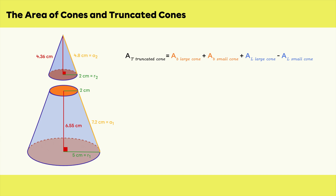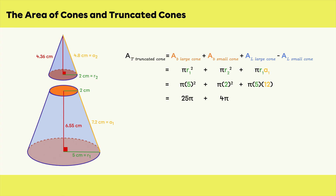To find the truncated cone's total area, start by calculating the large cone's base area using pi r squared. Since R1 is five centimeters, five squared is 25, giving 25 pi. The small cone's base area with R2 of two centimeters gives 4 pi. Next, the lateral area of the large cone using pi r a: with R1 equal to 5 and A1 equal to 12, you get 60 pi. Using the same formula for the small cone with R2 equal to 2 and A2 equal to 4.8, you get 9.6 pi.